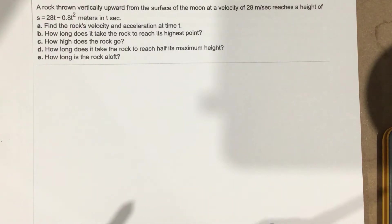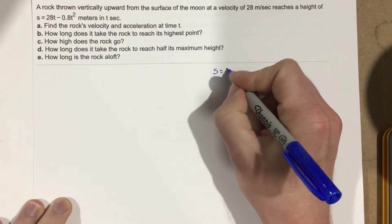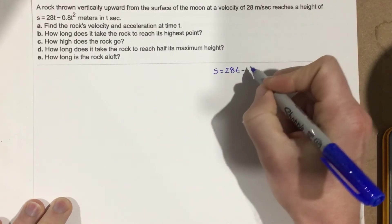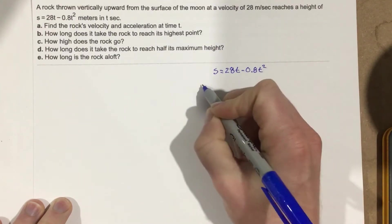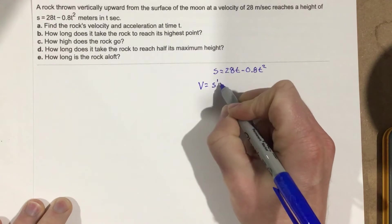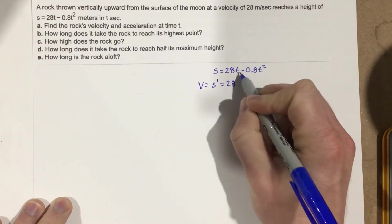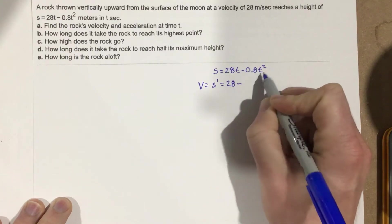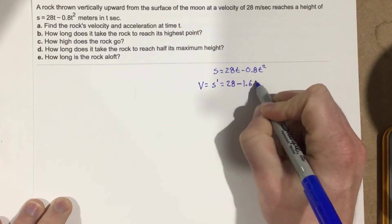So first we note that s equals 28t minus 0.8t squared. Let's find the velocity, which we know is s prime. The derivative is going to be 28 minus — bring the two to the front — 1.6t.